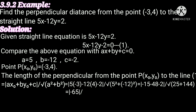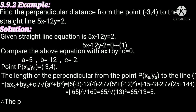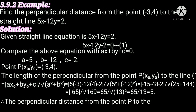That is equal to mod of minus 65 divided by square root of 169. We know the square root of 169 is 13. So that is equal to 65 divided by 13. After cancellation, that is equal to 5. Therefore the perpendicular distance from the point P to the line is 5. This is our required problem solution.